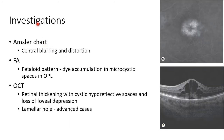Coming to the investigations done for a case of CMO, Amsler chart will show central blurring and distortion. Fundus fluorescein angiography will show a petaloid pattern — that is, dye will accumulate like a flower petal in microcystic spaces in the outer plexiform layer, as you can see in this picture.